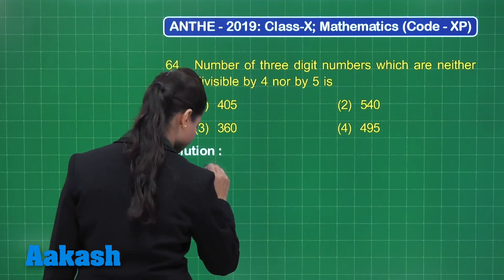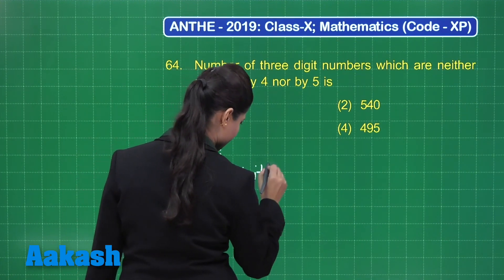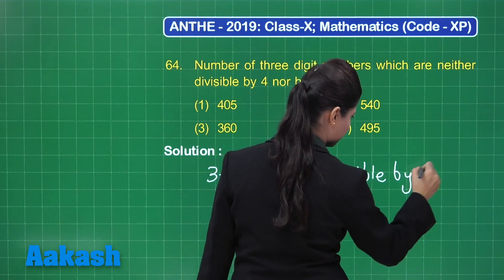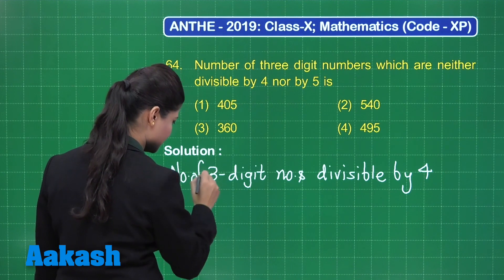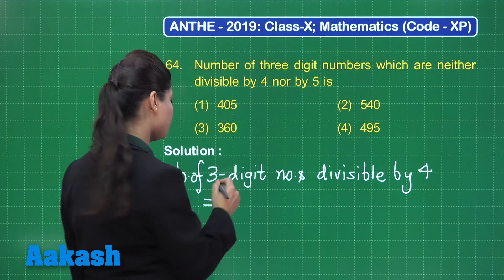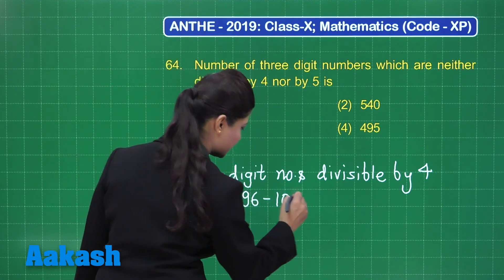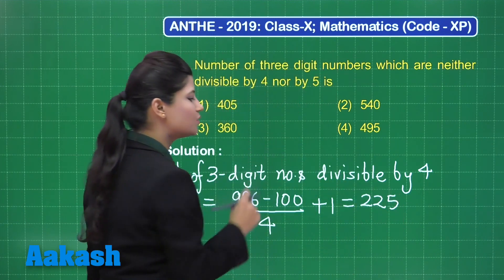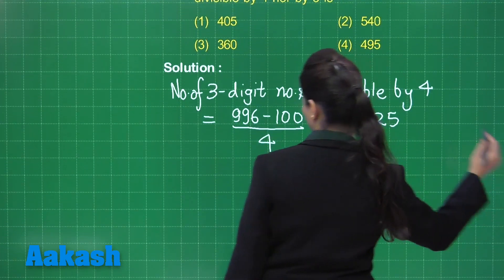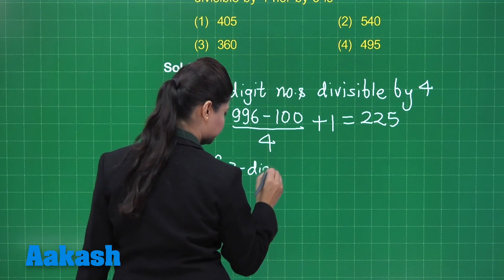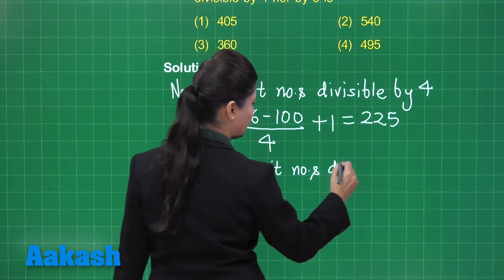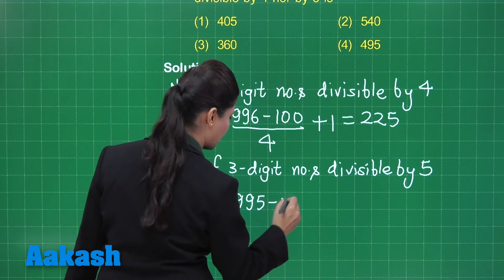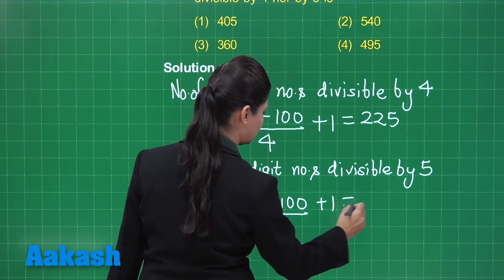So if you want to calculate the number of three-digit numbers divisible by 4, you need to calculate the largest possible three-digit number divisible by 4, which is 996, and the smallest one is 100.